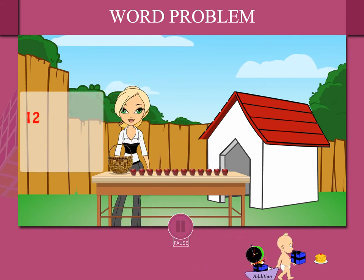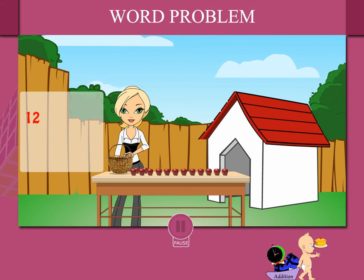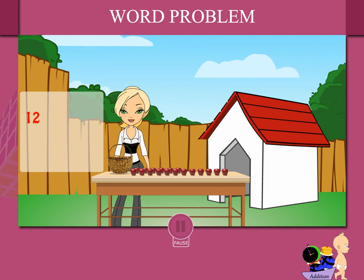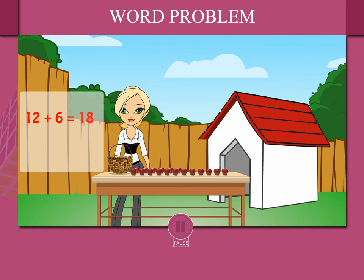She pulls out six more apples from the basket one by one. How many apples now? Twelve plus six makes eighteen apples.